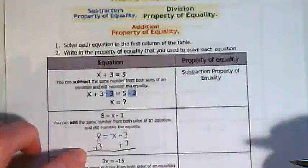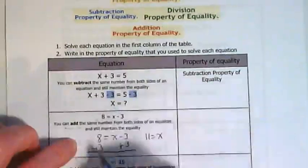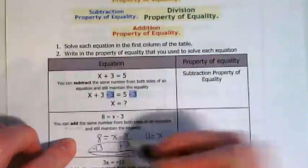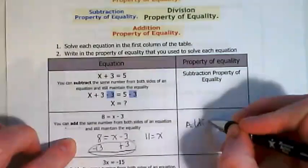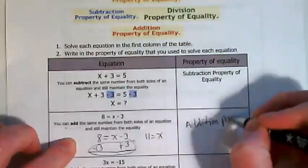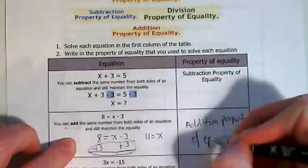8 plus 3 is 11, so this would be 11 is equal to x. But because I added, it's the action I'm taking here, this is the addition property of equality.